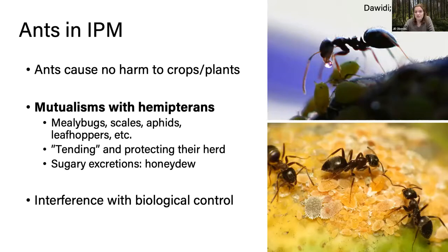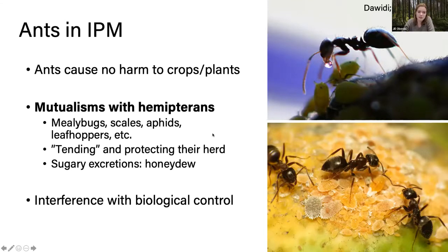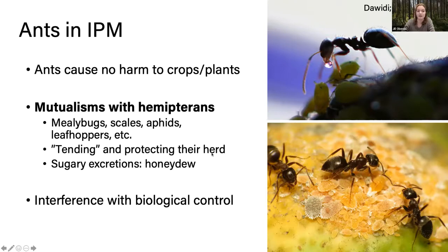Ants themselves cause no harm to crops and plants, but they have mutualisms with hemipterans — mealybugs, scales, aphids, leafhoppers, the true bugs of the insect world. They tend and protect them like a little herd of sheep. In return, the bugs secrete sugary excretions called honeydew and the ants eat and drink that sugary honeydew. Because of this, even though ants don't cause crop damage, they can seriously interfere with biological control by defending these hemipterans from other threats.